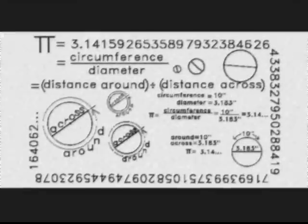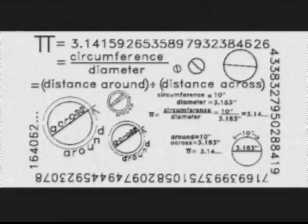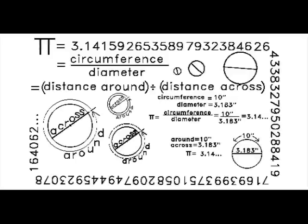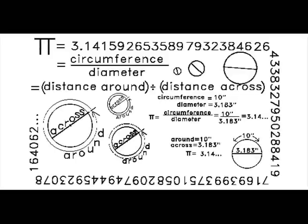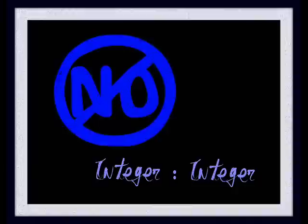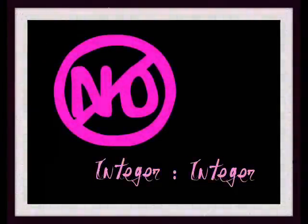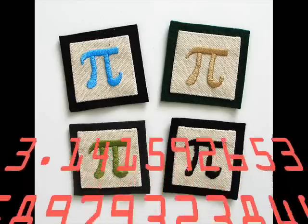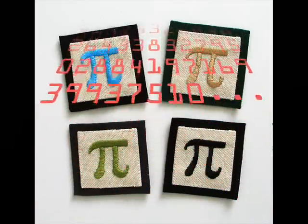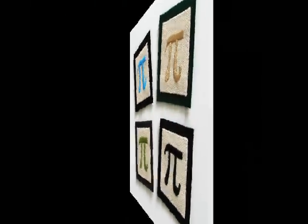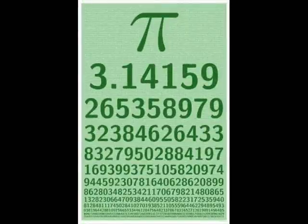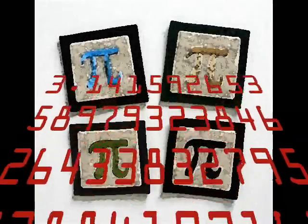I know that you need it, to calculate it. You want it bad, you need that pi so bad. Because you know that it's the ratio of circumference to diameter. It can't be written as the ratio of any two integers. Ohhhhh — the endless number.